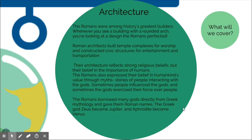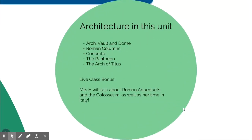The Romans took Greek culture, renamed it, and also took many architecture and sculpture ideas, so it can be hard to distinguish between Roman and Greek at first. Specifically, we're going to talk about the arch, vault, and dome — made possible by concrete — Roman columns, concrete itself, the Pantheon, and the Arch of Titus. In live class I'll also talk about Roman aqueducts, the Colosseum, and my time in Italy.